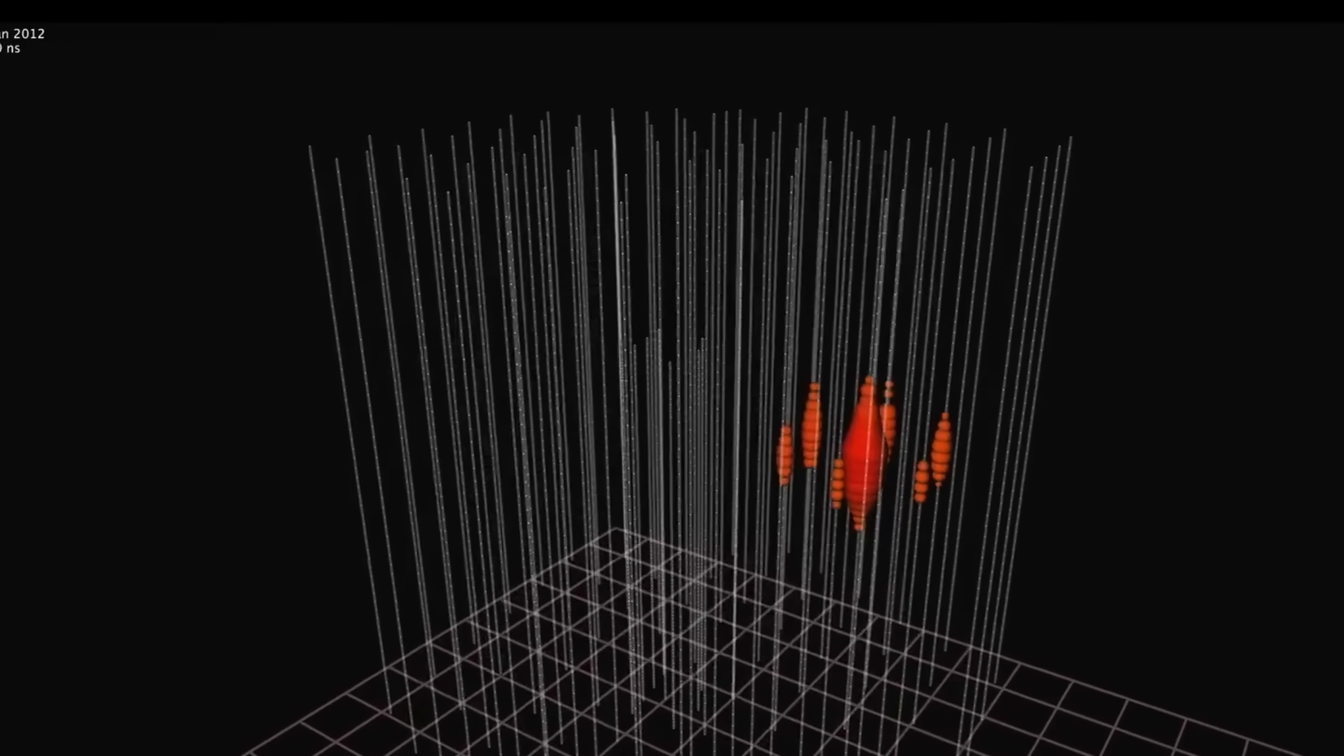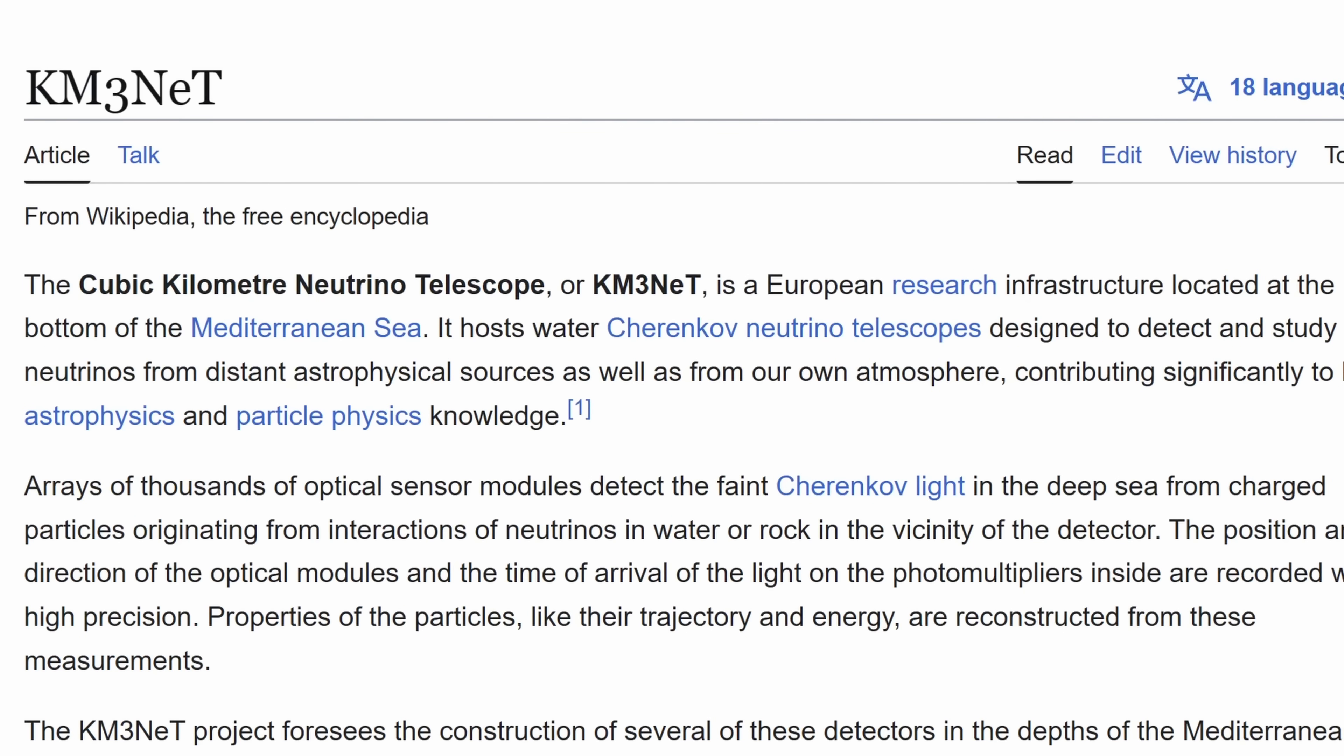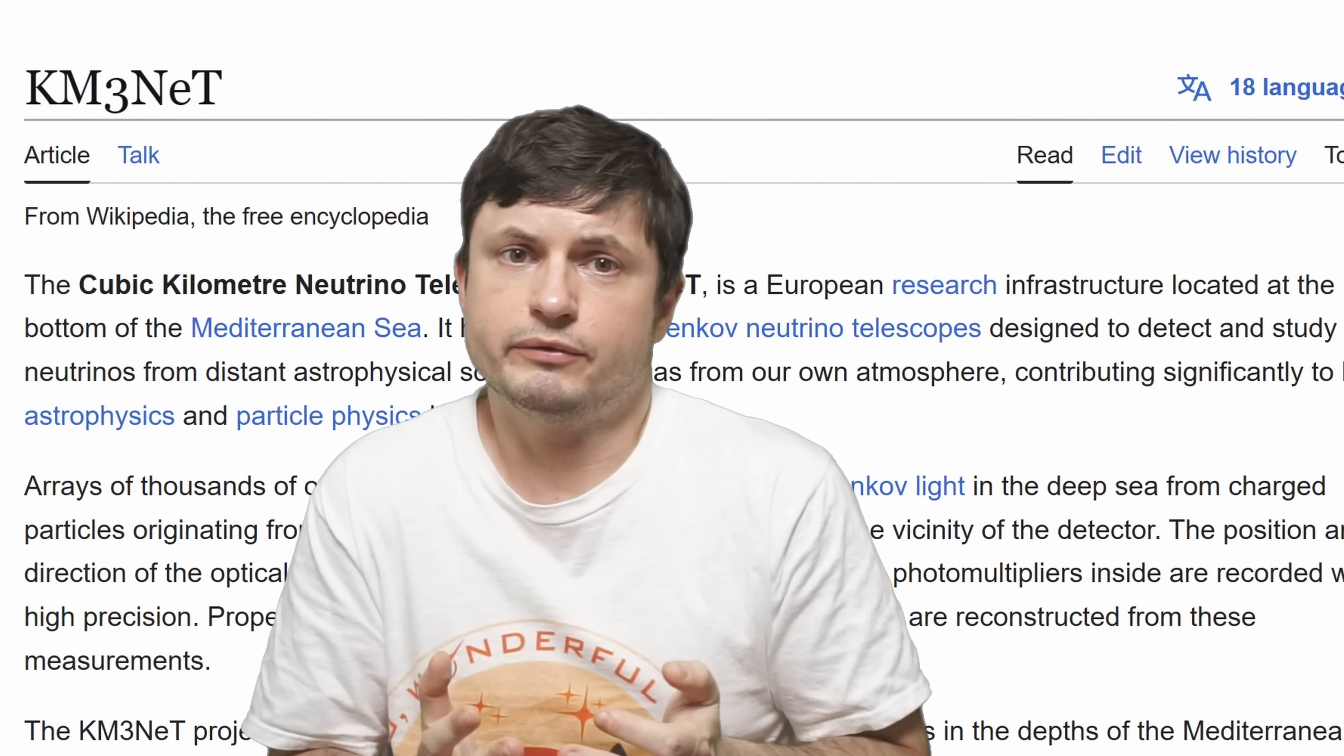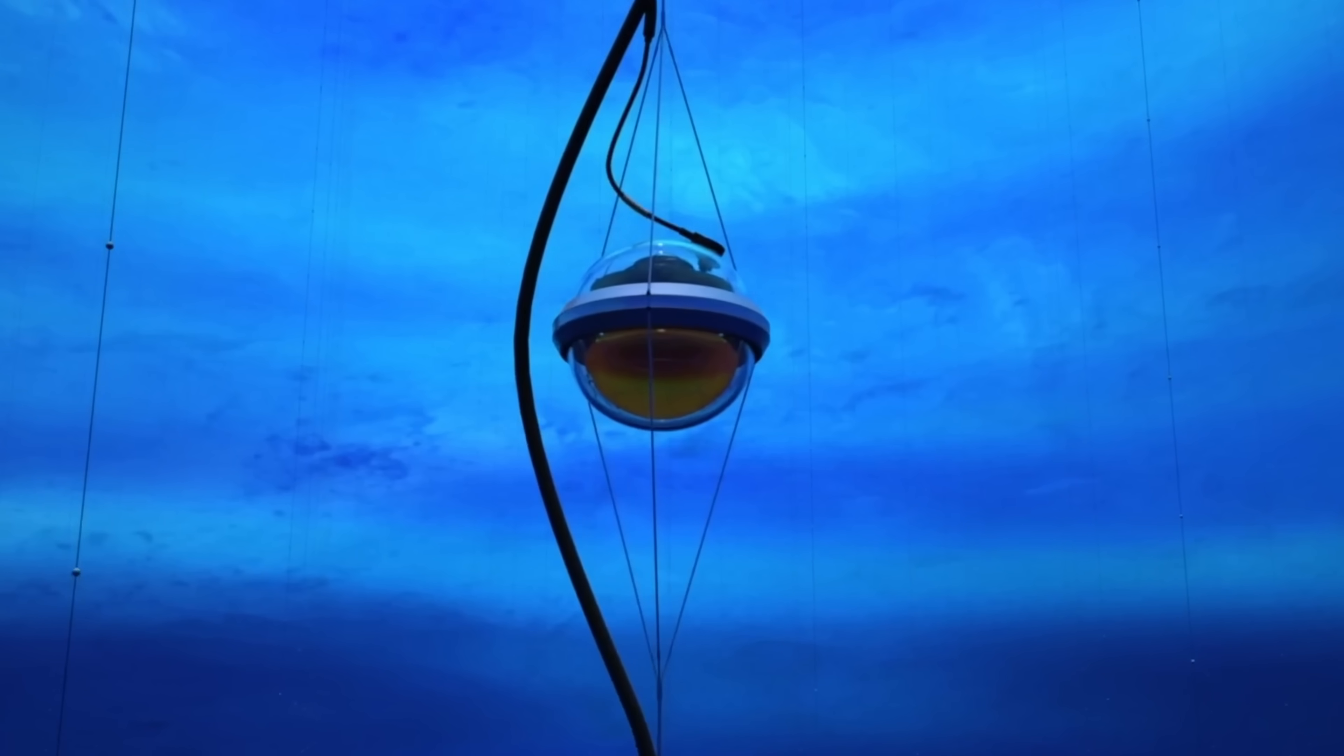But this time, one of the newer detectors, the one in Europe, KM3NeT, was able to detect something we've never seen before shortly after it started its operation. Here, unlike the IceCube neutrino, these detectors are actually just inside water and they're very deep inside, so there's very little interaction with other types of radiation.